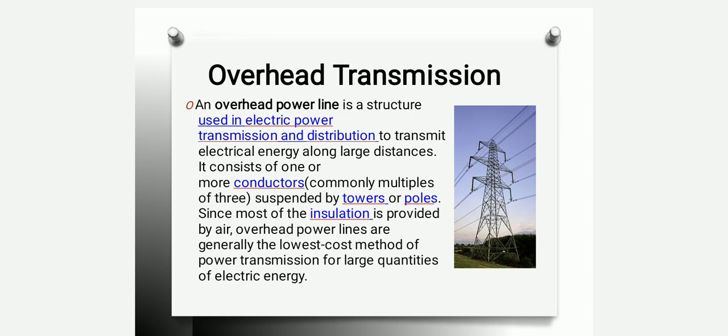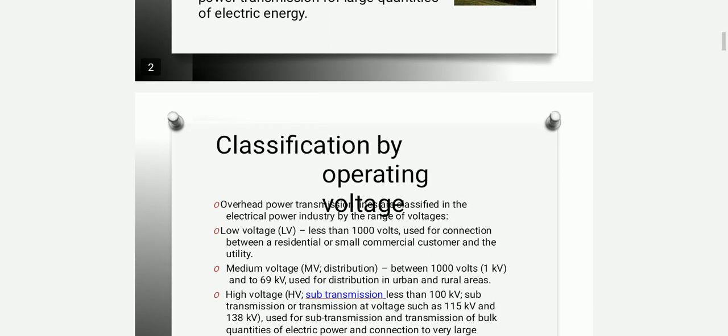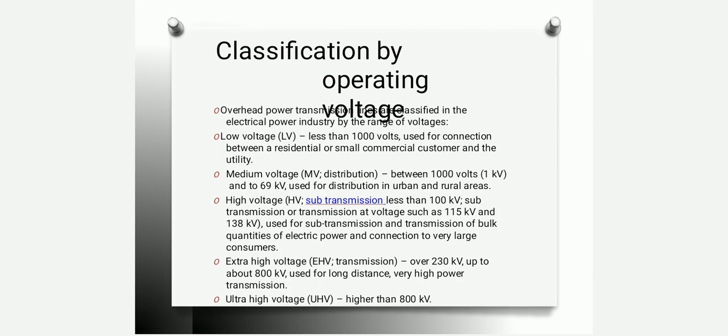Overhead transmission lines are classified based on voltage level. For less than 1,000 volts, used for residential or small commercial connections between customer and utility, it is called low voltage. Medium voltage distribution is 1,000 volts to 69 kV. High voltage is less than 100 kV, sub-transmission or transmission voltage is 115 kV, extra high voltage is over 230 kV, and ultra-high voltage is higher than 800 kV. In India, the transmission voltage is 760 kV.